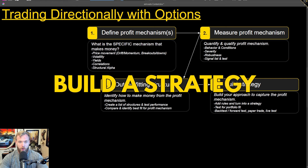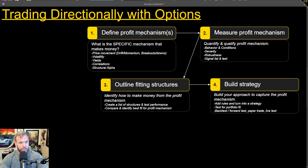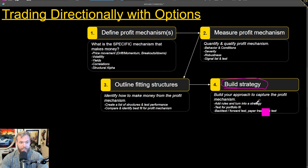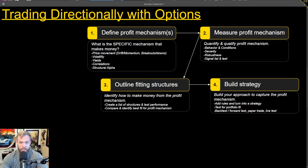The last thing is to tie all of this together. Now we understand the profit mechanism, we've measured it, we know how it behaves, we've identified signals that help us find it, and we've compared different structures. We codify what we're doing so that we can continually do it over time consistently. That allows us to optimize our approach and ultimately make more money, which is the name of the game.